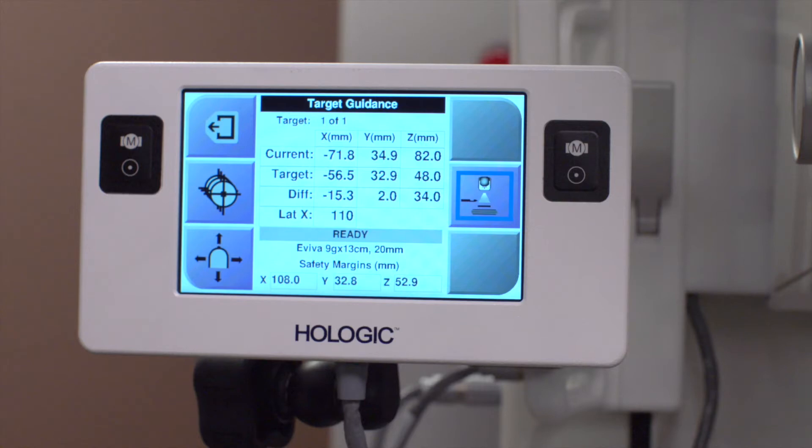The coordinates are then transmitted to the biopsy control module. The lesion coordinates are displayed as X, Y, Z, and a fourth coordinate, also called lateral X.